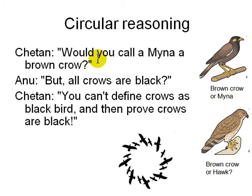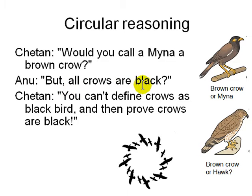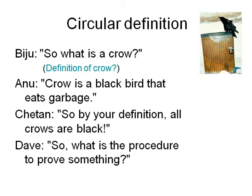What is circular reasoning? Chetan asks: would you call a brown crow a crow? Anu says but all crows are black. Chetan points out you can't define crows as black birds and then prove crows are black — that's using the definition itself to prove what you're trying to prove, which is circular. If you define a crow as 'a black bird that eats garbage,' then by definition all crows are black. That's the kind of problem that arises when you don't know the difference between a definition and a proof.